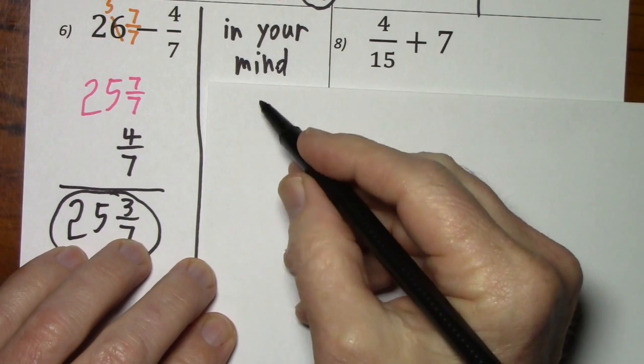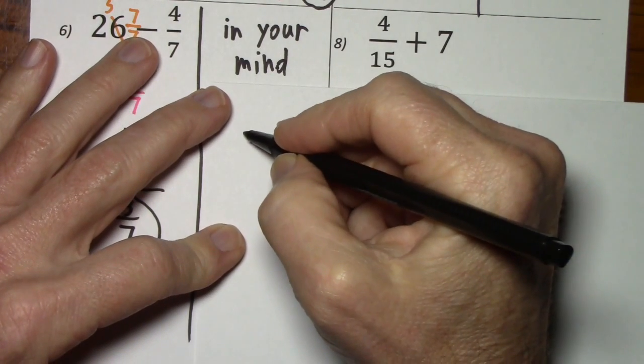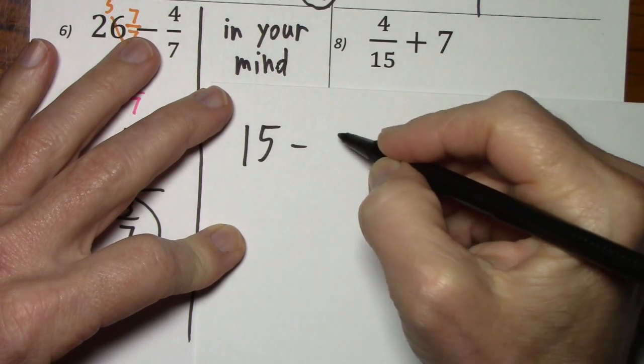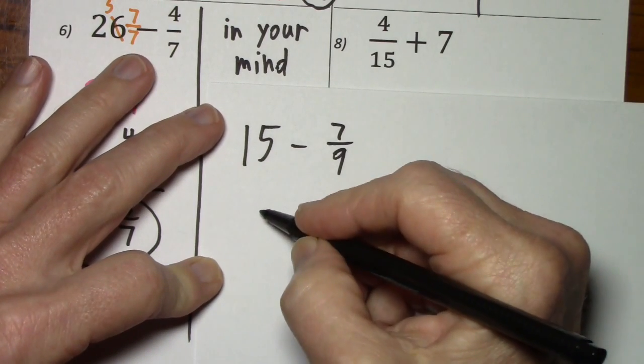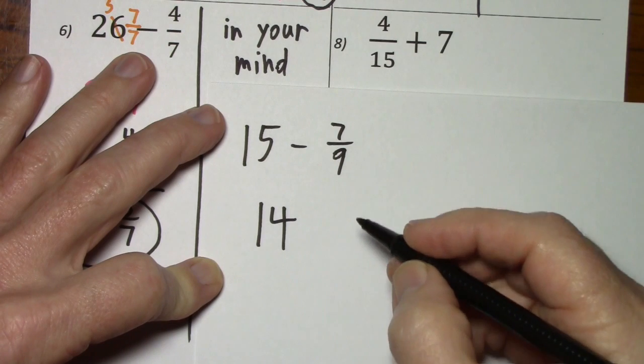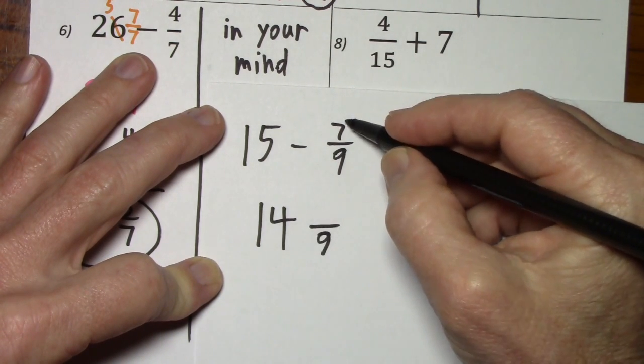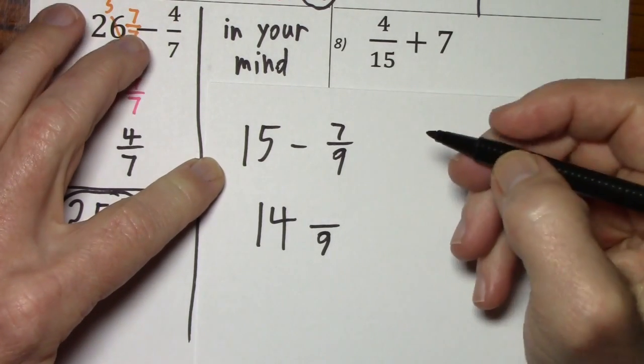We'll go over one more example of doing the calculation in your mind. If you had, let's say, 15 and you're trying to subtract 7 ninths. You're going to end up with 14, one less. And, to get this to 9 ninths, that would be that you subtracted 1. You need 2 more.